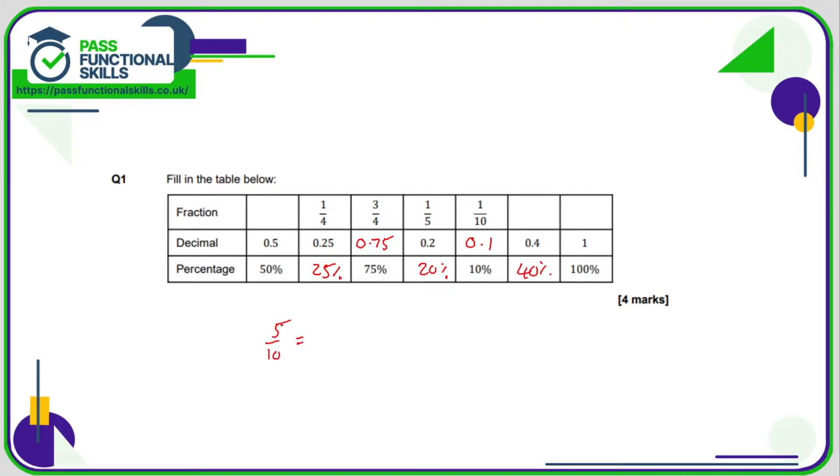If you divide both the top and the bottom by five, so that answer is one-half. 0.4, we can do the same thing. We can remember that 0.4 is four-tenths, and if we simplify that by dividing top and bottom by two, that will simplify to two-fifths.